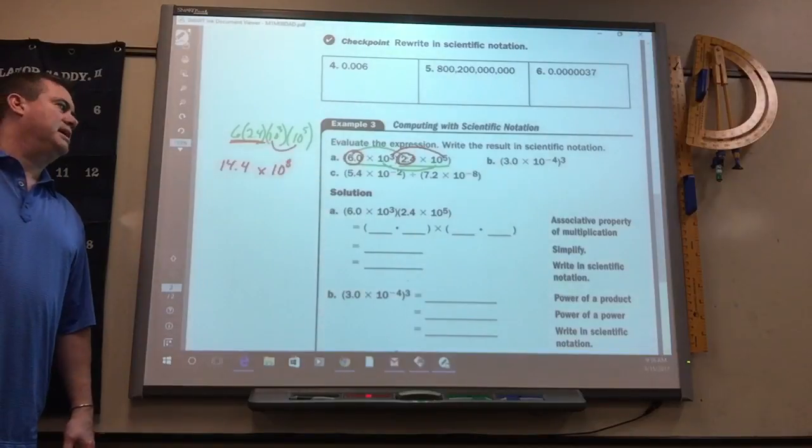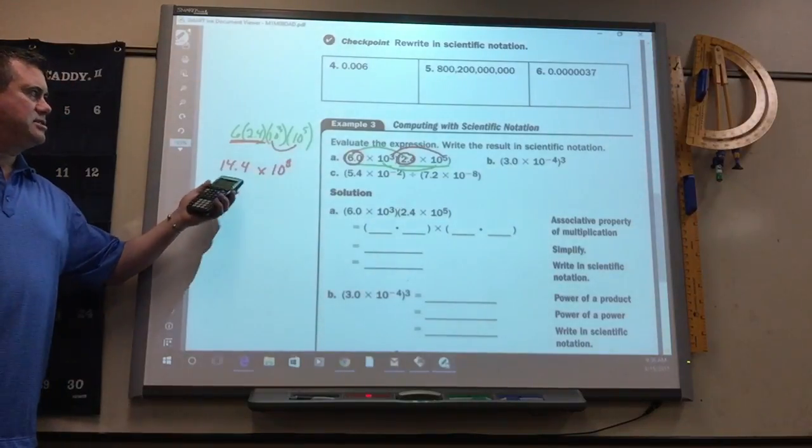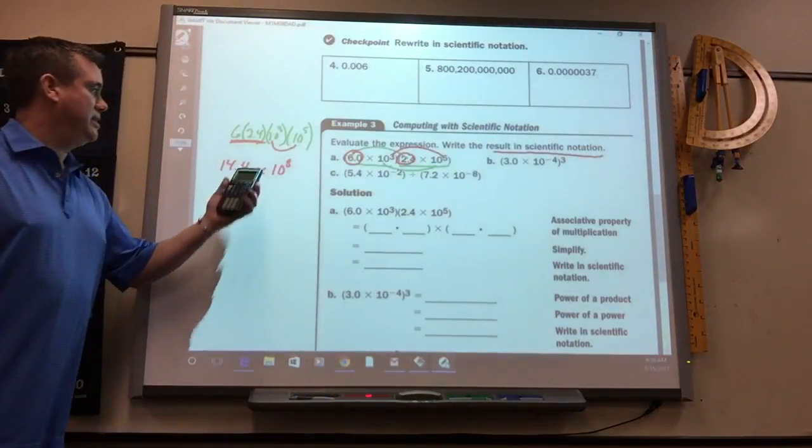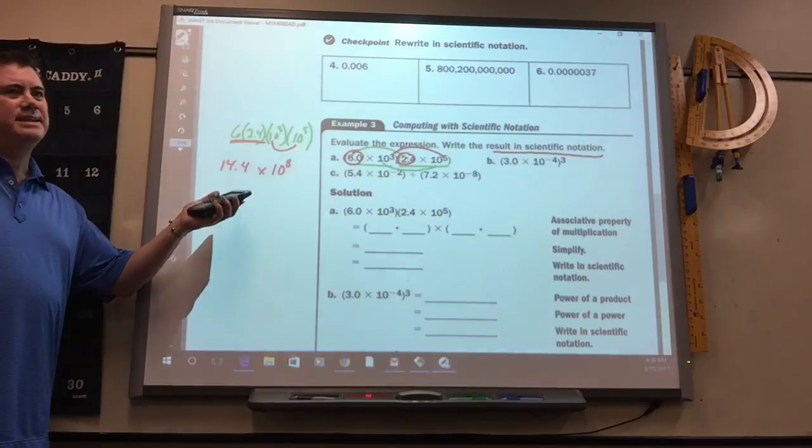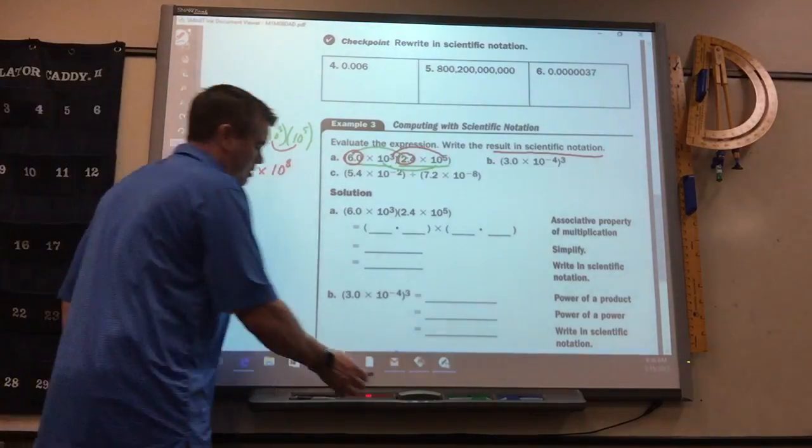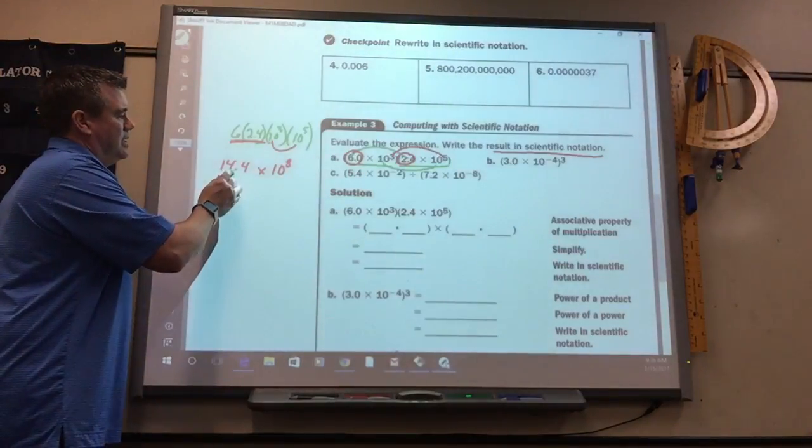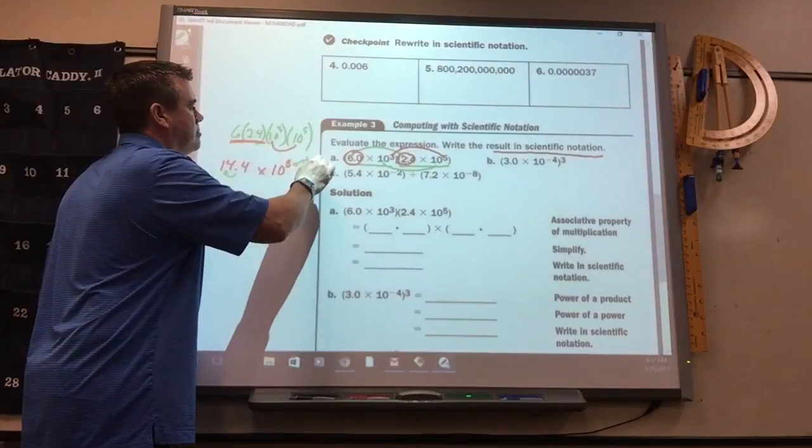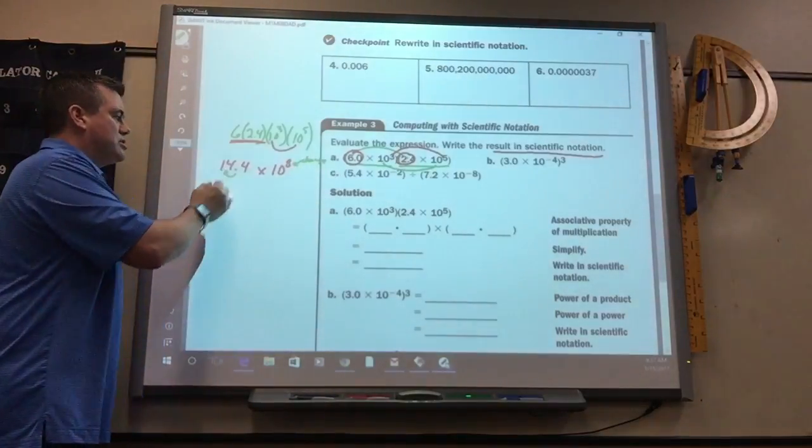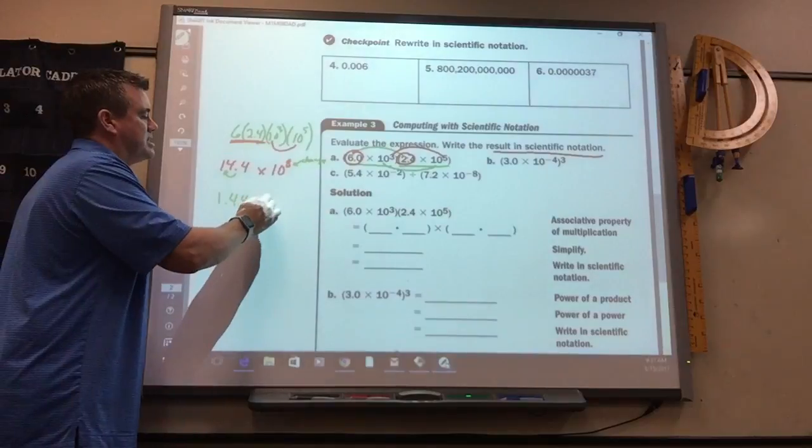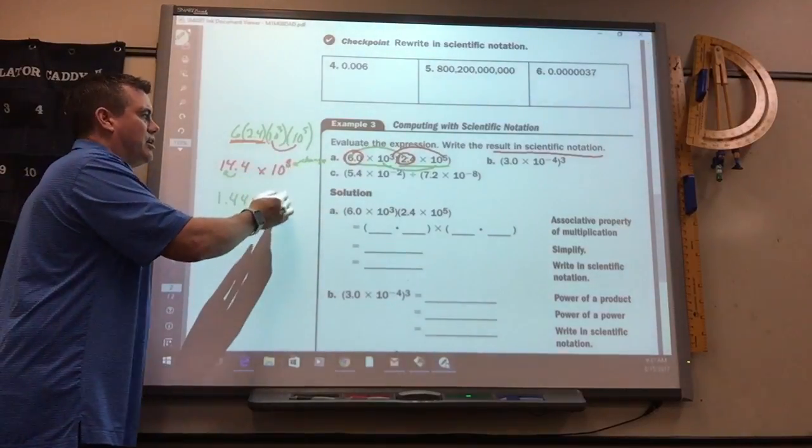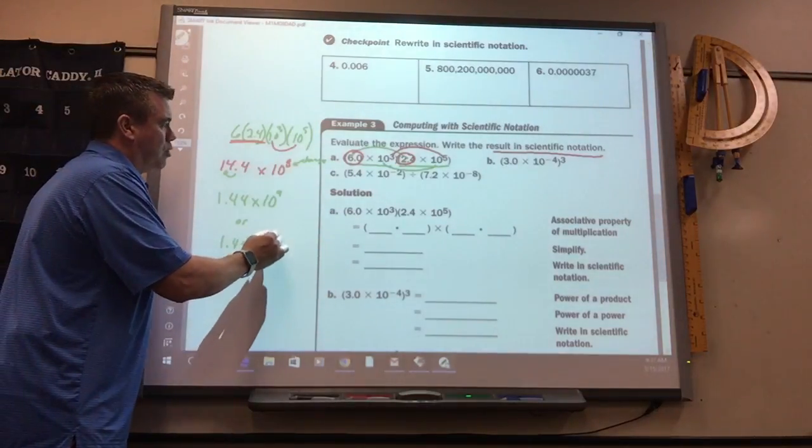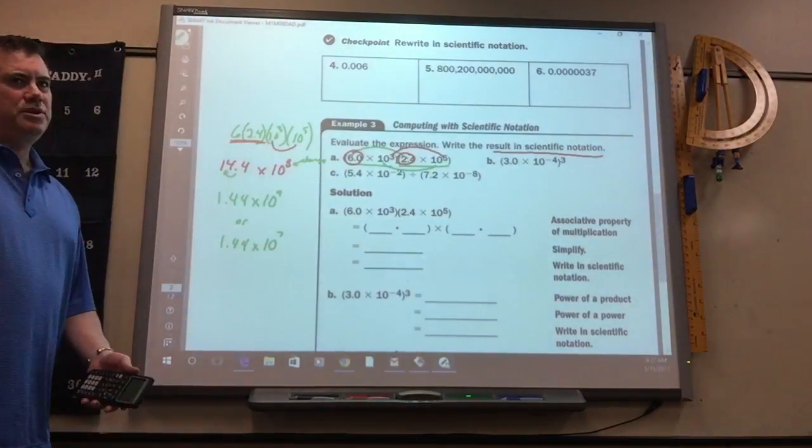But here's the part that is a little bit tougher. This is not in scientific notation right here. The decimal has to be after the first number. So what you've got to do is you've got to move this here, which means you have to change that.